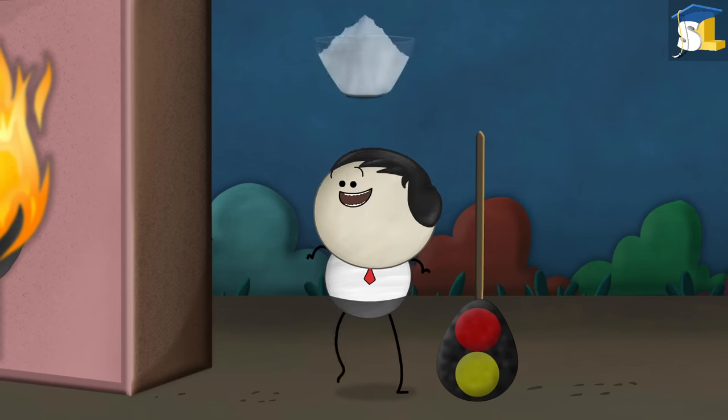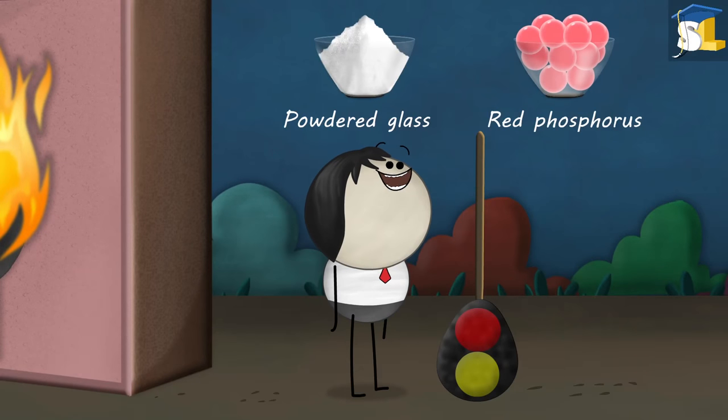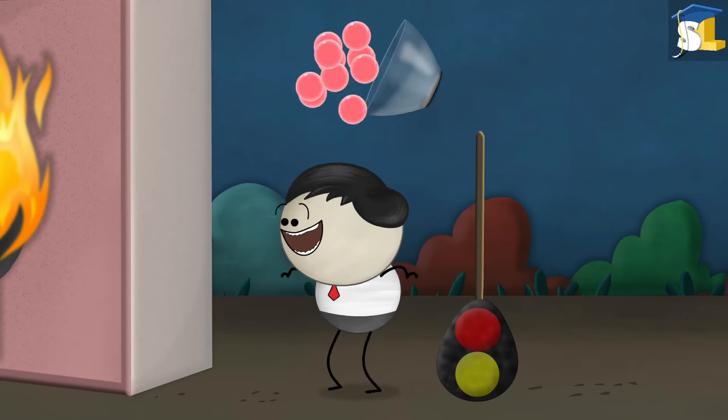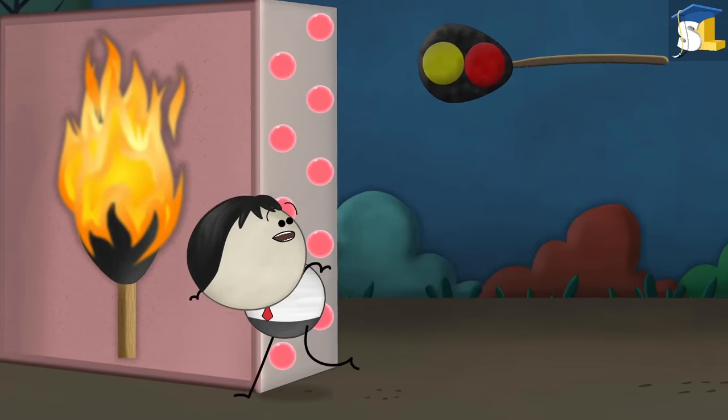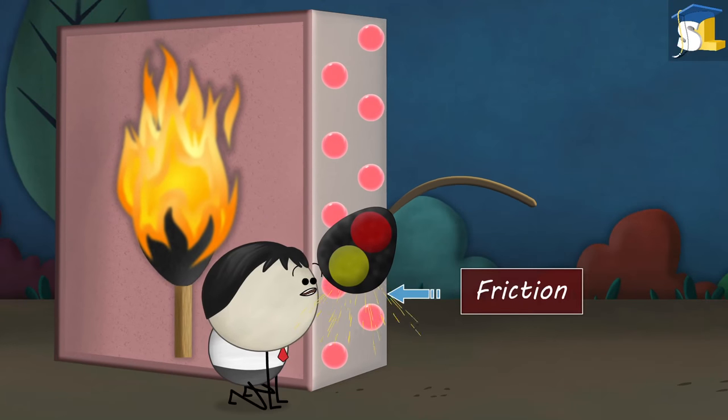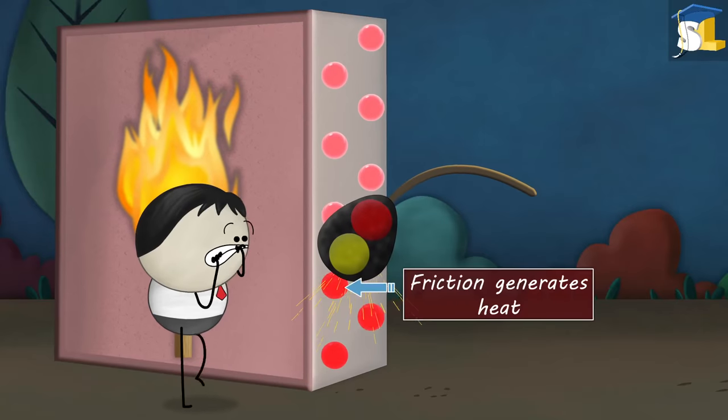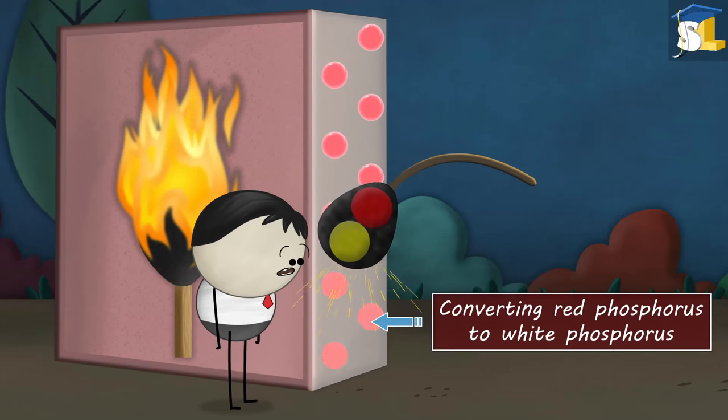The rubbing surface of a matchbox has powdered glass and red phosphorus. On striking the match against it, friction is caused. Friction generates heat, converting red phosphorus to white phosphorus.